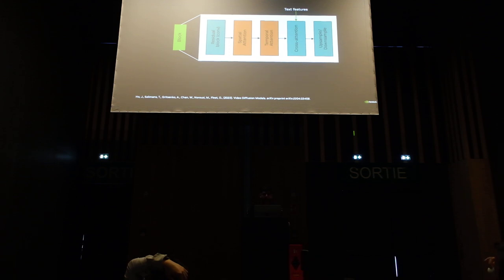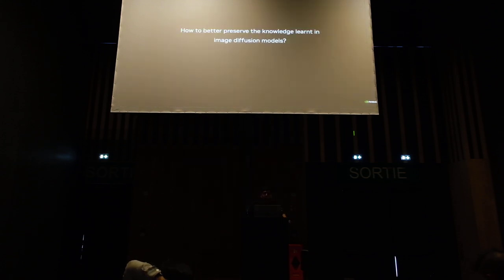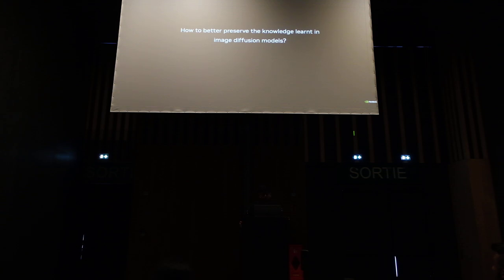After we add these two components, we can train a model — we can fine-tune this model on the videos and get a video generation model. These are some of the things that most of the video generation folks do. The thing we started asking is: can we do something to preserve the knowledge even more? Is there something that can be done to preserve image diffusion information better?